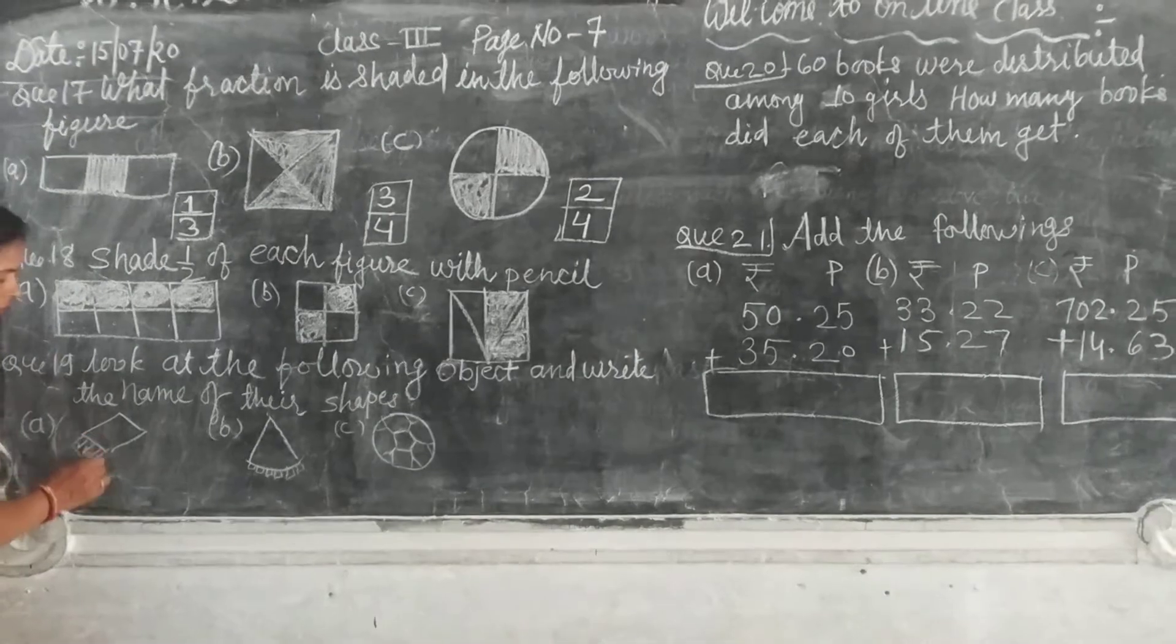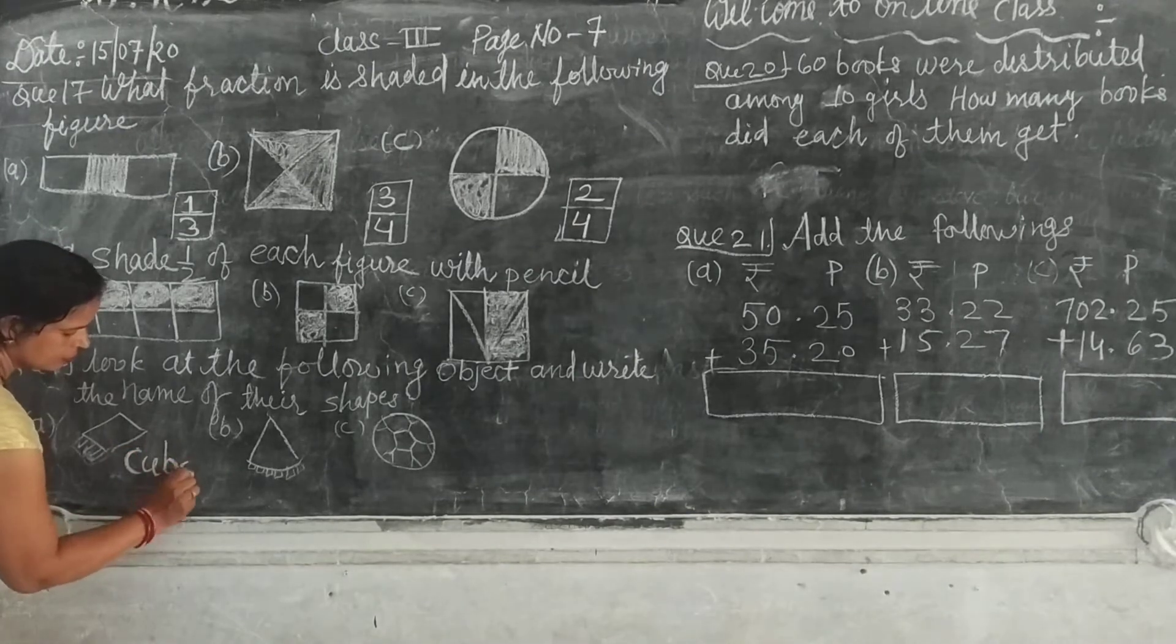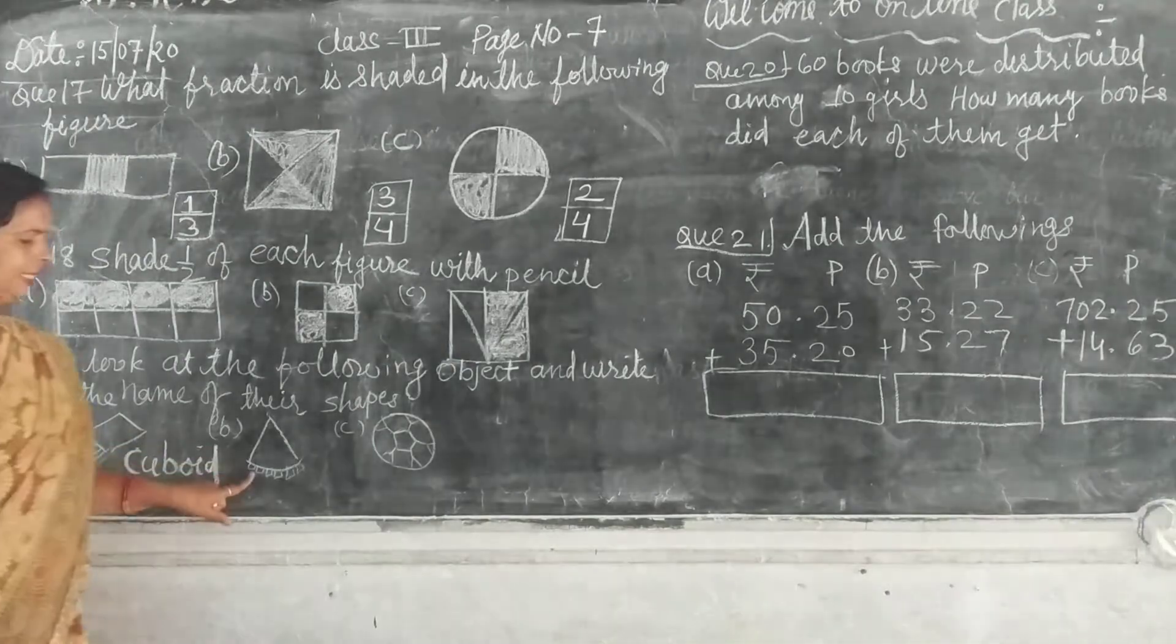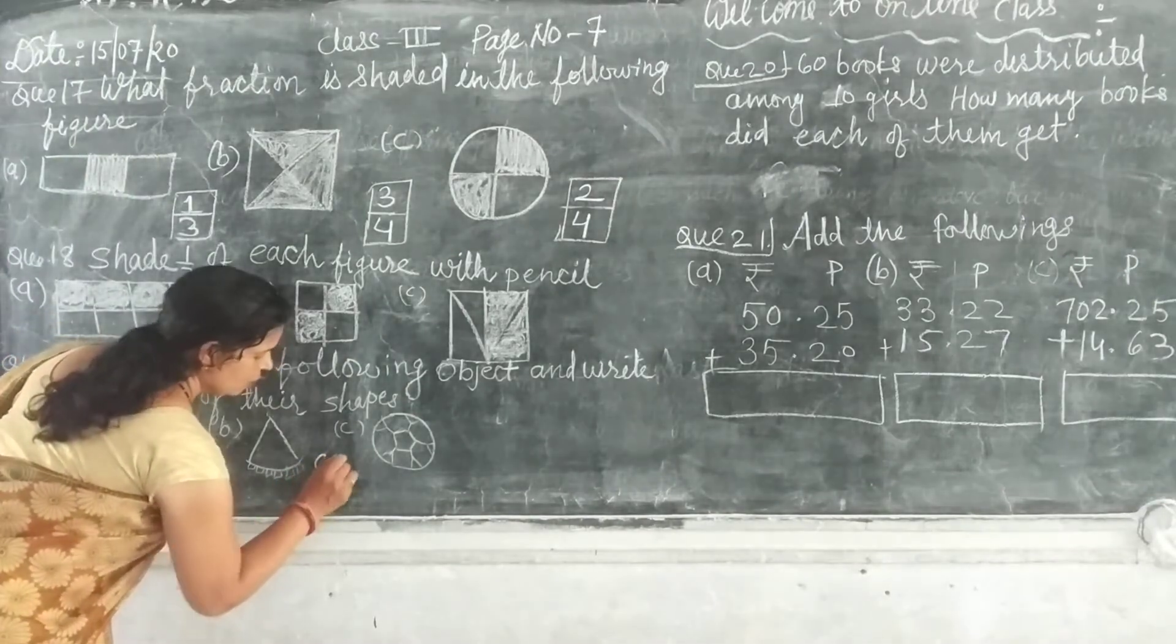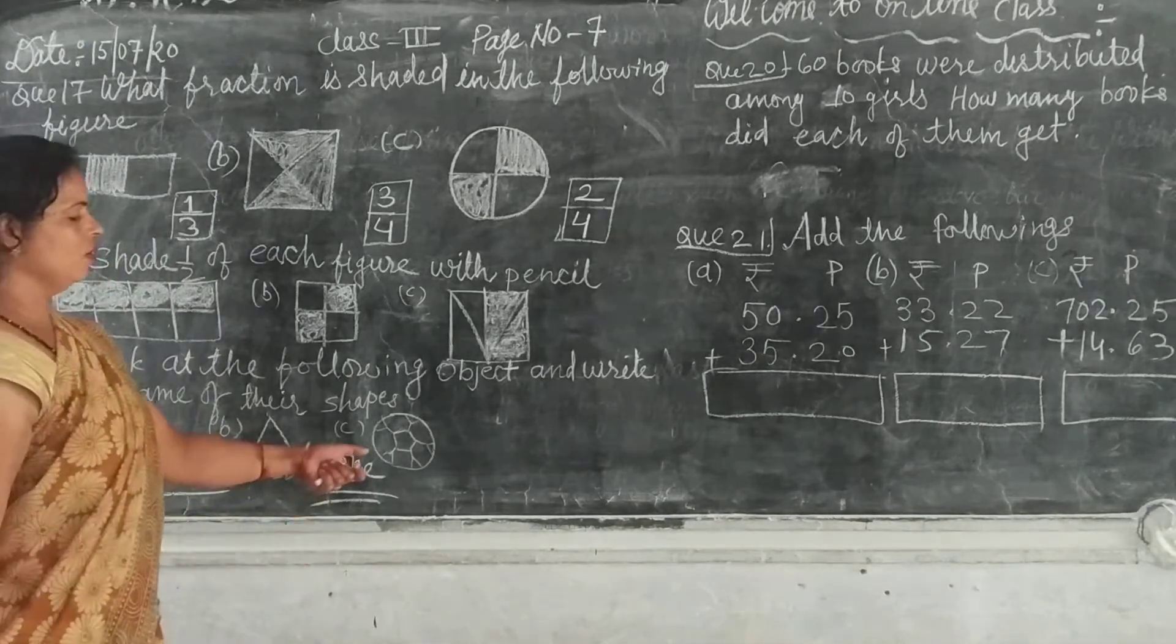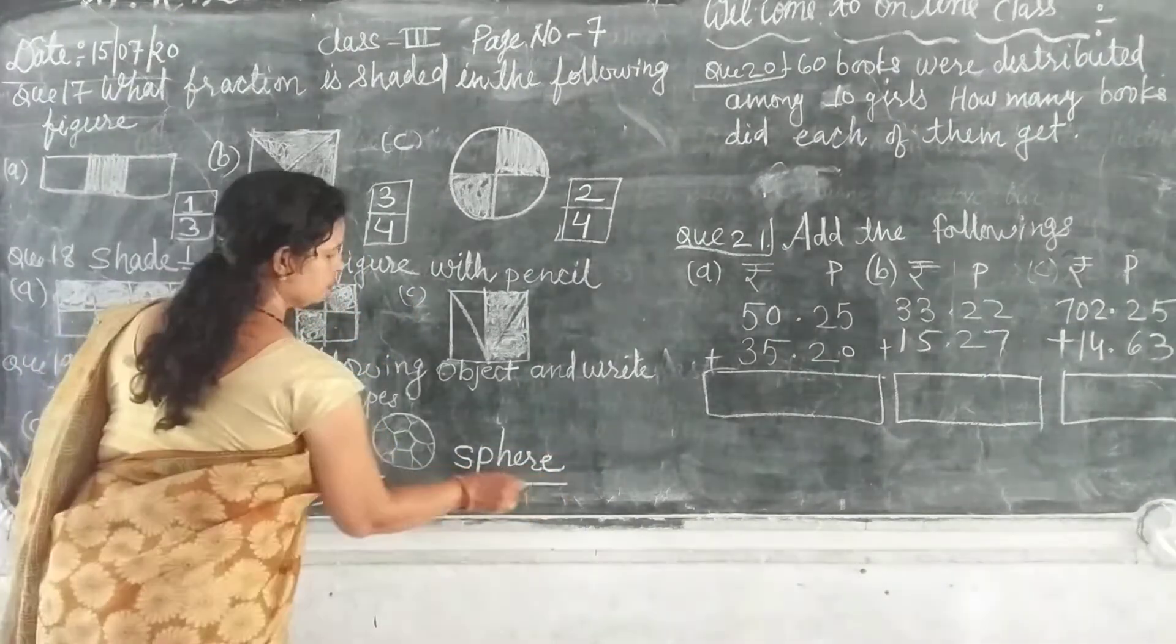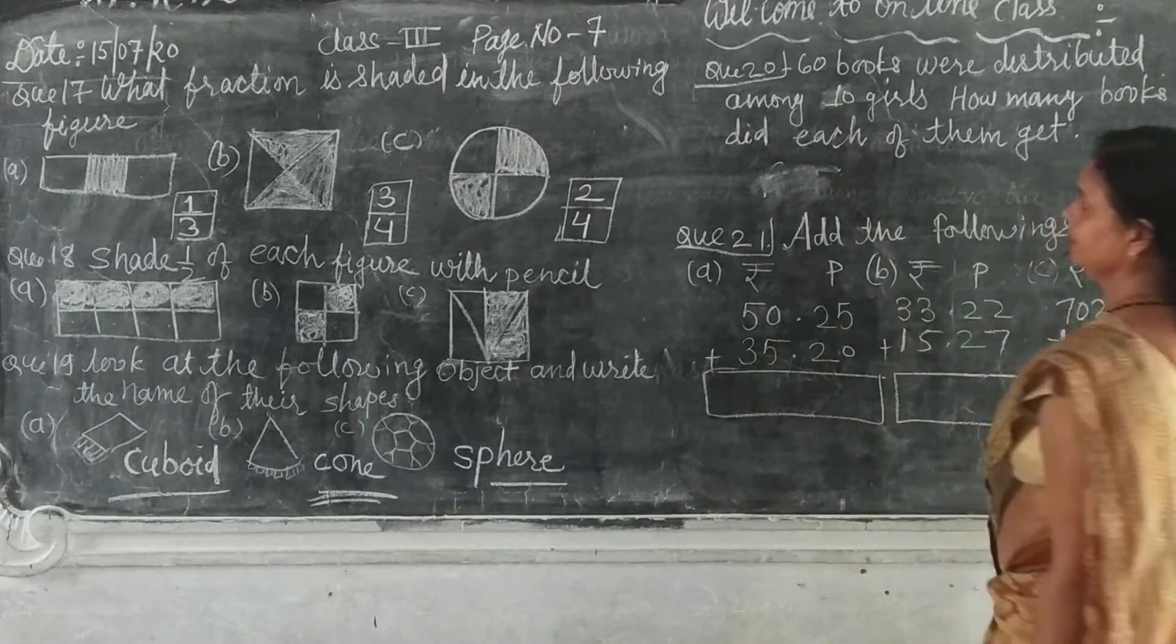Look at this matchbox. Matchbox is cuboid. This shape is cuboid. Then here we can choose cuboid. This is a cone. Here is the cube. This is sphere.